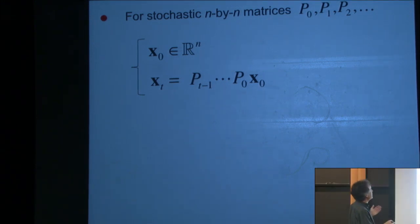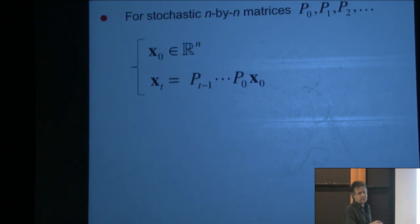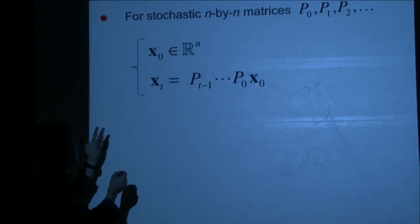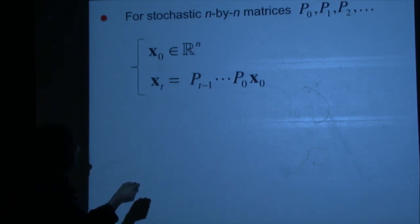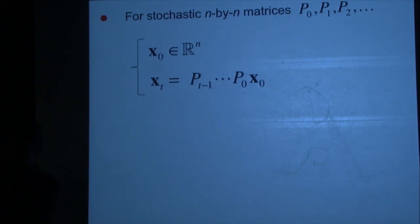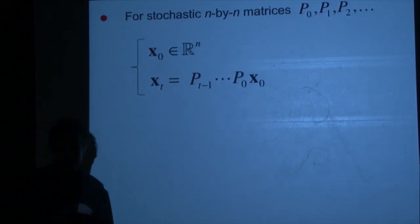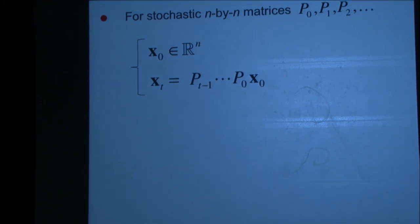Consider an infinite set of n-by-n stochastic matrices and consider multiplying them. This defines a dynamical system — you start with x_0, a point in R^n, and multiply those matrices to the left. Note: usually in Markov chains you multiply the other way. Here you multiply from the left; the vector is on the right. These are row-stochastic matrices.